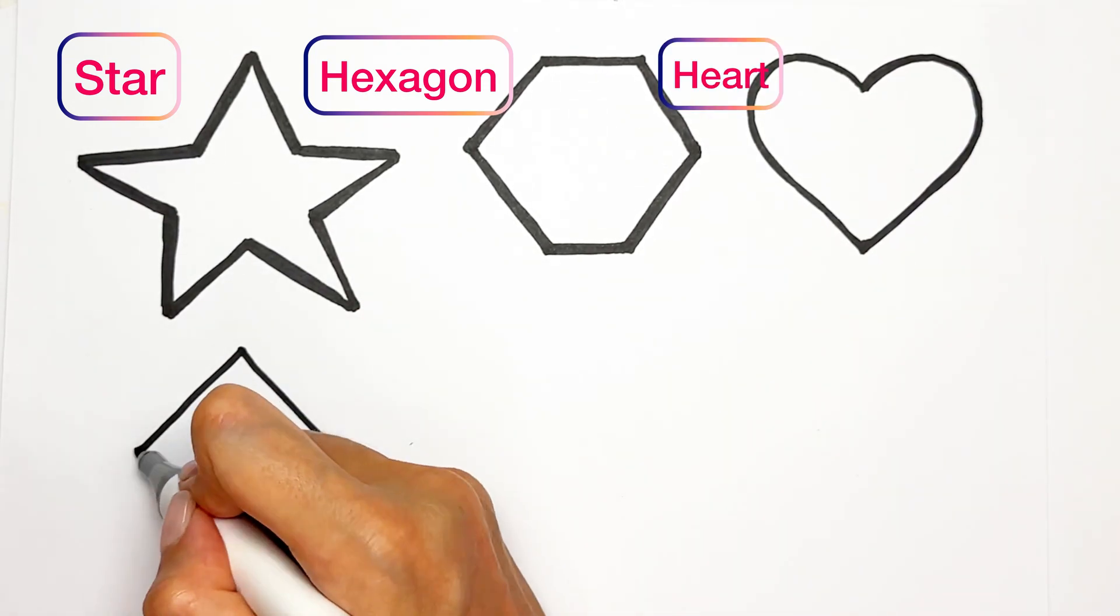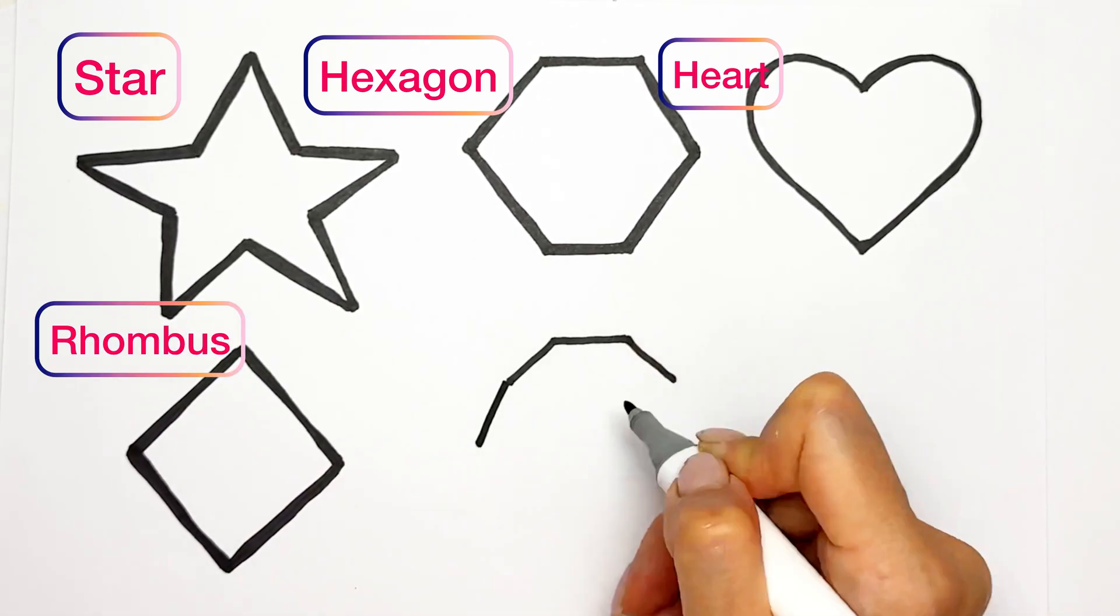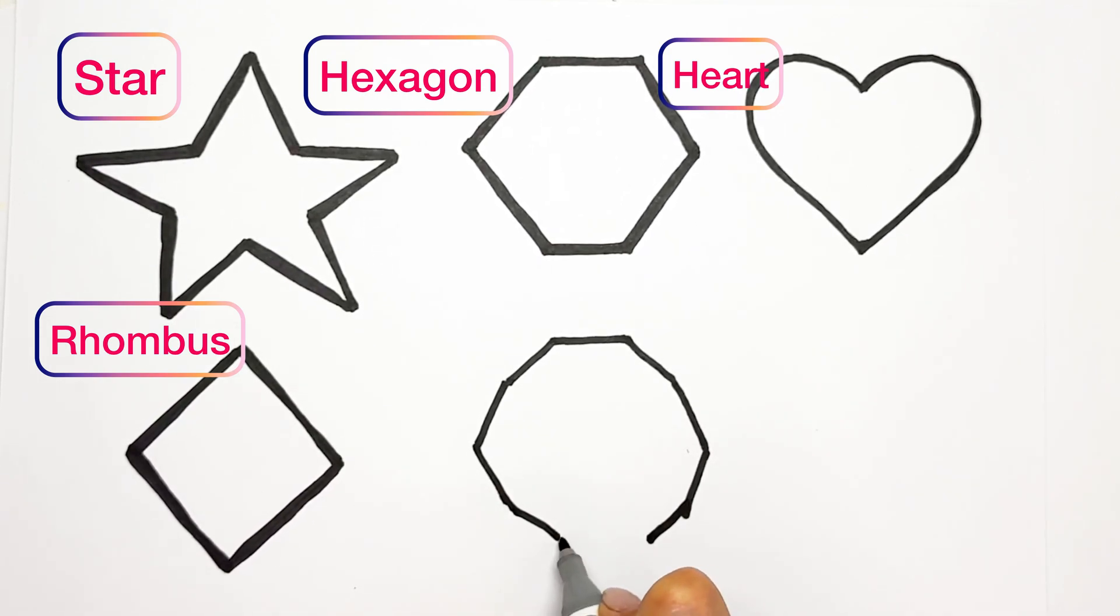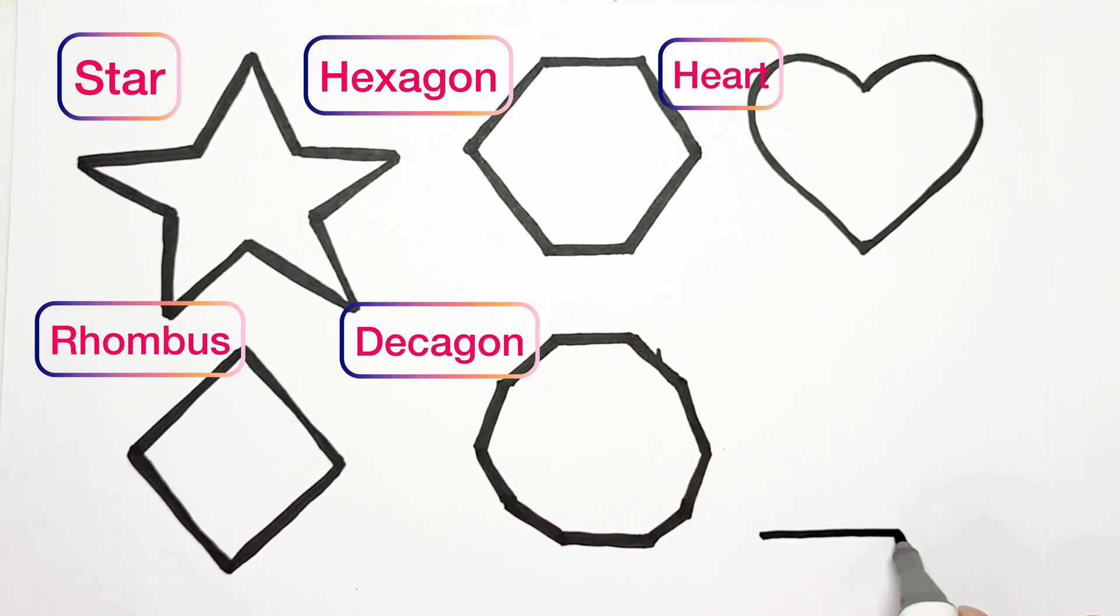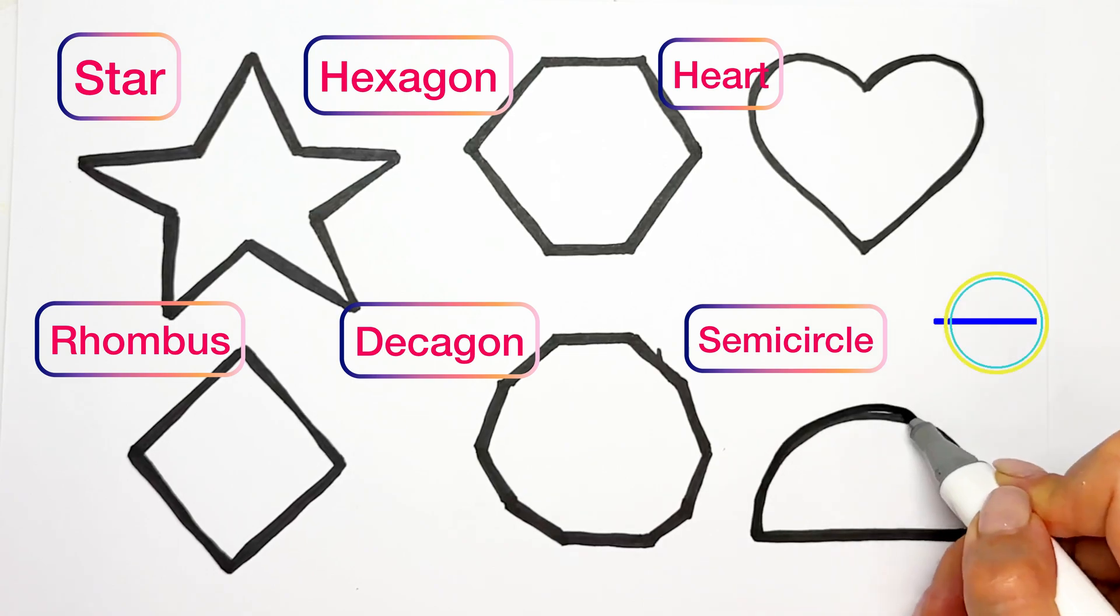Rhombus. The next one is decagon. Decagon has ten angles. And semicircle. Semicircle is half circle.